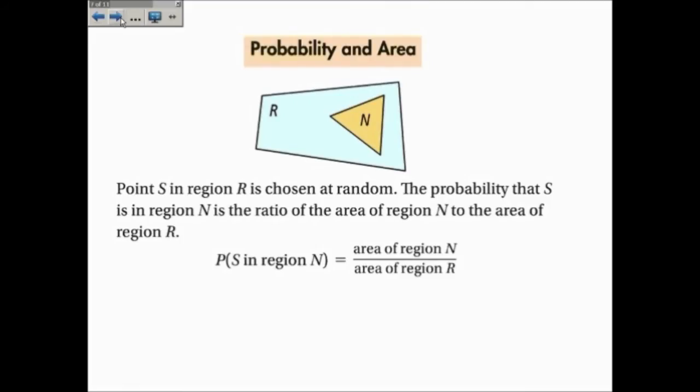The next topic is probability and area. Pause this if you want to take time to write this down in your notes, but point S is in a region R chosen at random. The probability that S is in region N is the ratio of the area of region N to the ratio of region R.